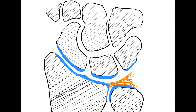The bones of the carpus are linked by ligaments known as the interosseous ligaments. In the proximal row, we have the scapholunate ligament and the lunotriquetral ligament. While in the distal row, we have the capito-hamate ligament, the ligament between the capitate and the trapezoid, and the ligament between the trapezoid and the trapezium.